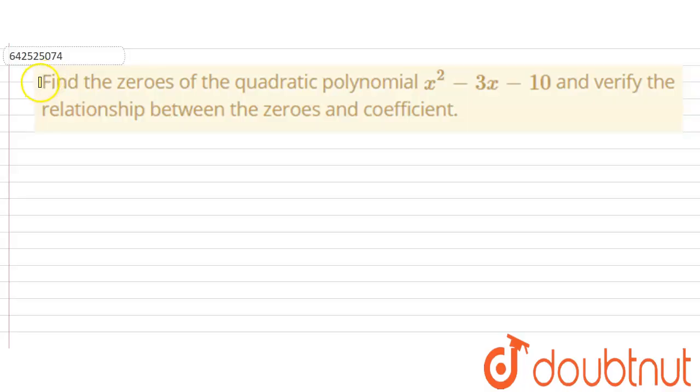Hello everyone, let's start this question. This question says that we need to find the zeros of the quadratic polynomial x² - 3x - 10 and verify the relationship between the zeros and the coefficients.